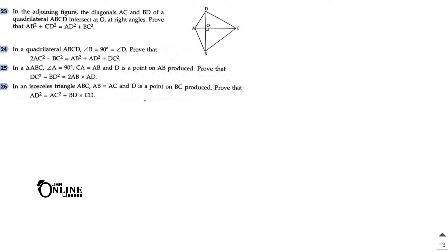In sum number 23: in the adjoining figure, the diagonals AC and BD of a quadrilateral ABCD intersect at O at right angles. Then prove that AB² + CD² = AD² + BC². Since BD is perpendicular on AOC, we can proceed using right angle triangles.